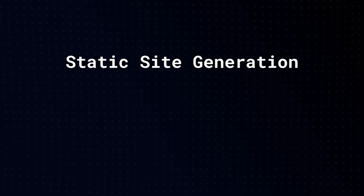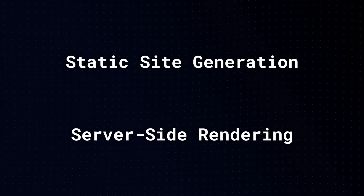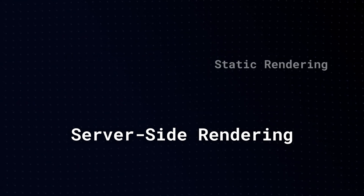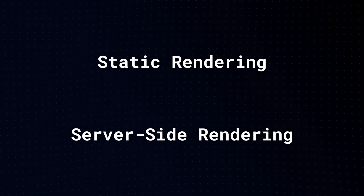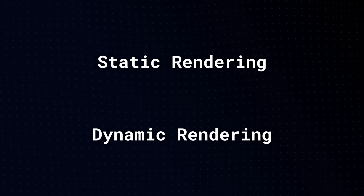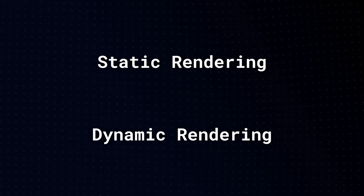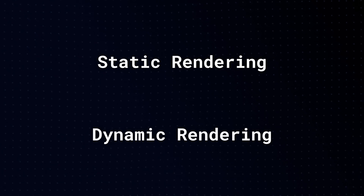Things have changed in Next.js 13, and I think it has become much simpler. Instead of using getStaticProps and getServerSideProps, Next.js 13 renders the page based on certain conditions. Next.js changed the naming: instead of static site generation, we now have static rendering, and instead of server-side rendering, we now have dynamic rendering. Static rendering is done at build time and the result is cached and reused on subsequent requests. Dynamic rendering happens at request time and the result is not cached.